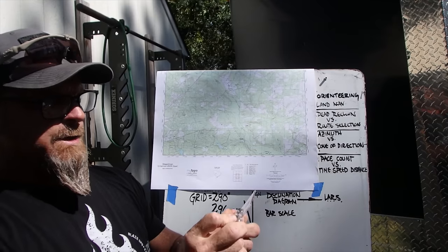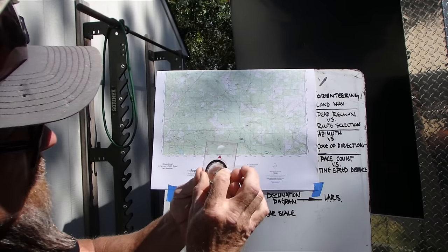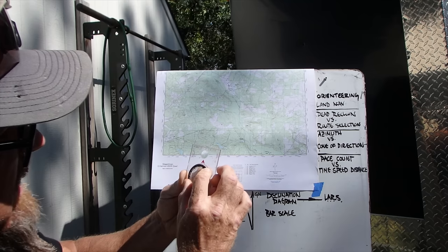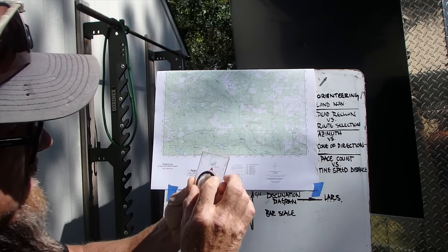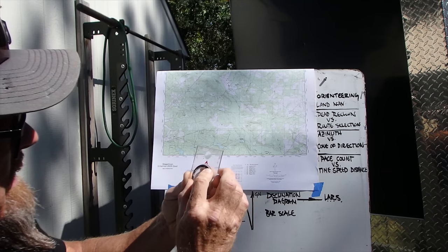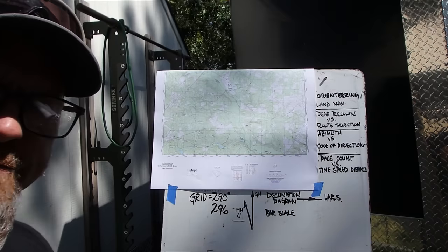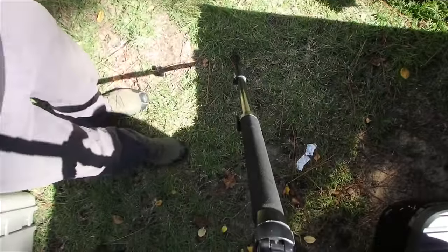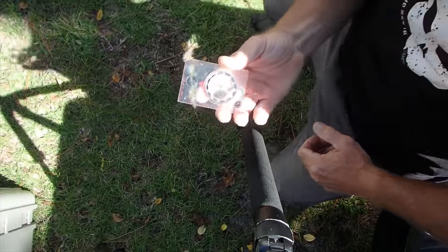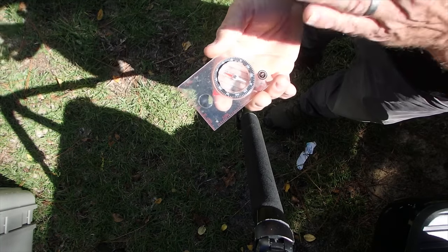So on my compass I want to put 296 right at the tip of that arrow — 296, right there. Now I orient the compass so the red needle sits in the arrow, and that's my heading. I'm going to walk in that direction.